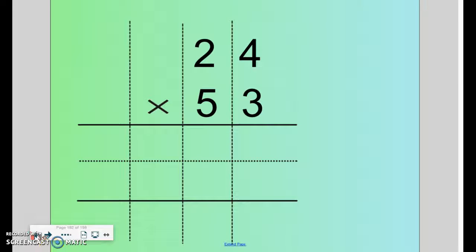We'll try one more problem. 24 times 53. 3 times 4 is 12. 3 times 2 is 6 plus 1 is 7.